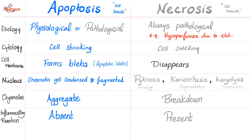Apoptosis could be physiological or pathological, but necrosis is always, always pathological. For example, if my heart is not receiving enough blood because my coronary artery is occluded by atherosclerotic plaques — that's necrosis, always a pathology. In apoptosis, the cell will start to shrink and the membrane will form blebs, known as apoptotic blebs. The cell is shrinking and the membrane is having these blebs.